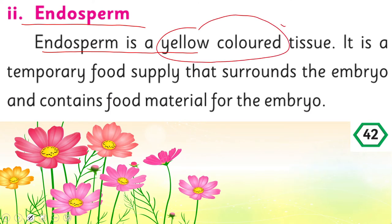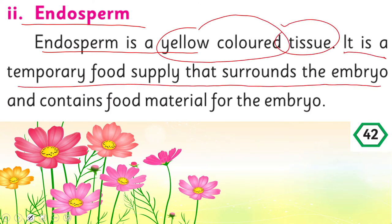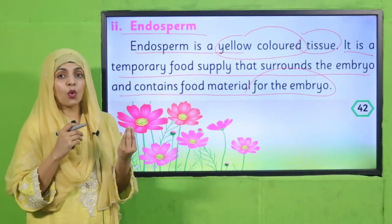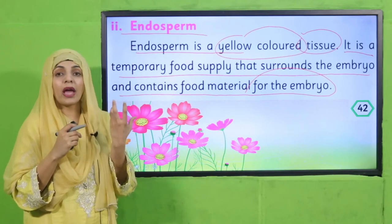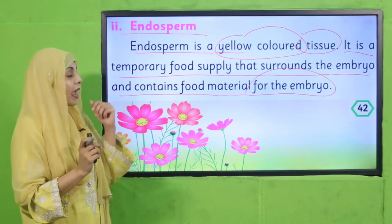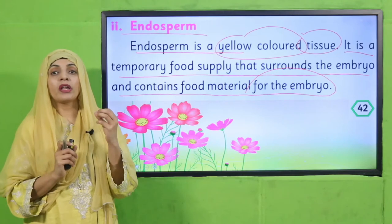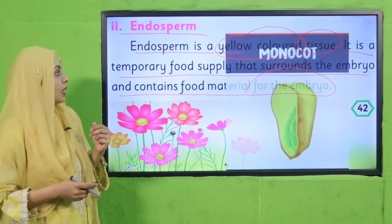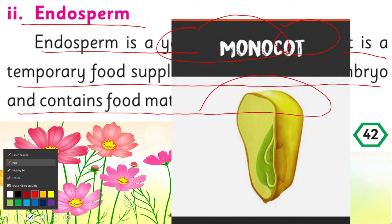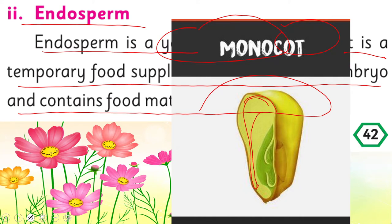Endosperm is a yellow-colored tissue. It is a temporary food supply that surrounds the embryo and contains food material for the embryo. The endosperm is basically the food reservoir of the seed, present inside the seed. It helps the embryo to germinate by providing it energy. Here you can see in the monocot seed picture — this yellow-colored portion is the endosperm.